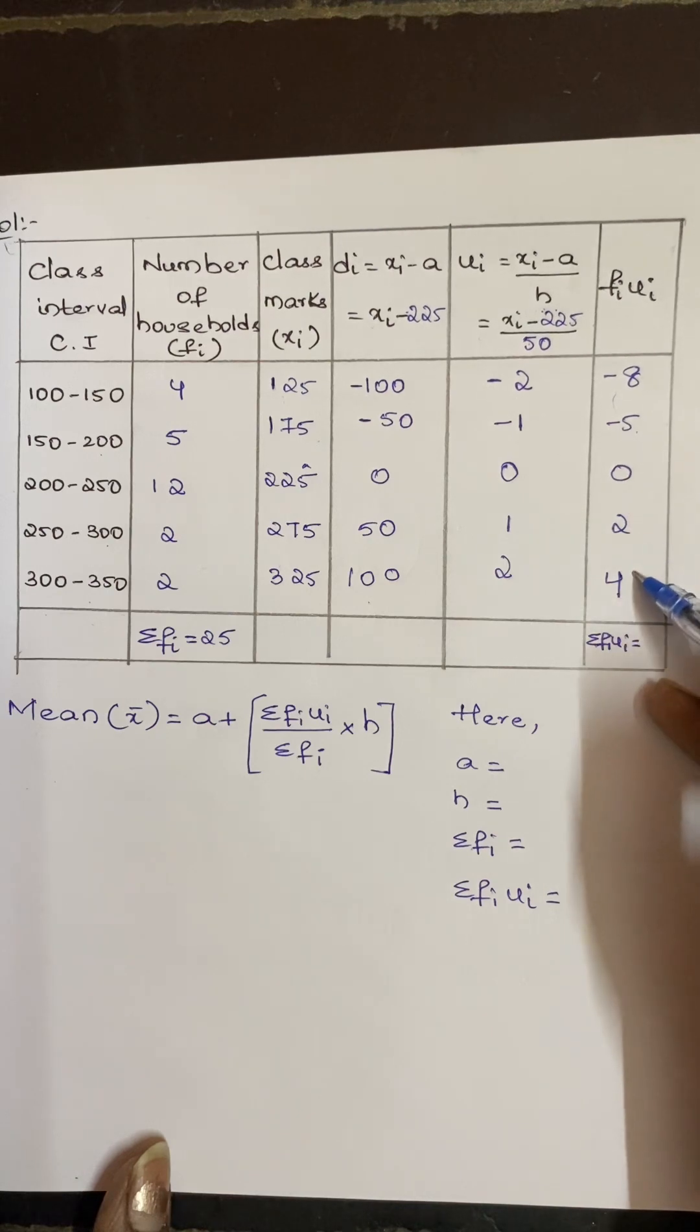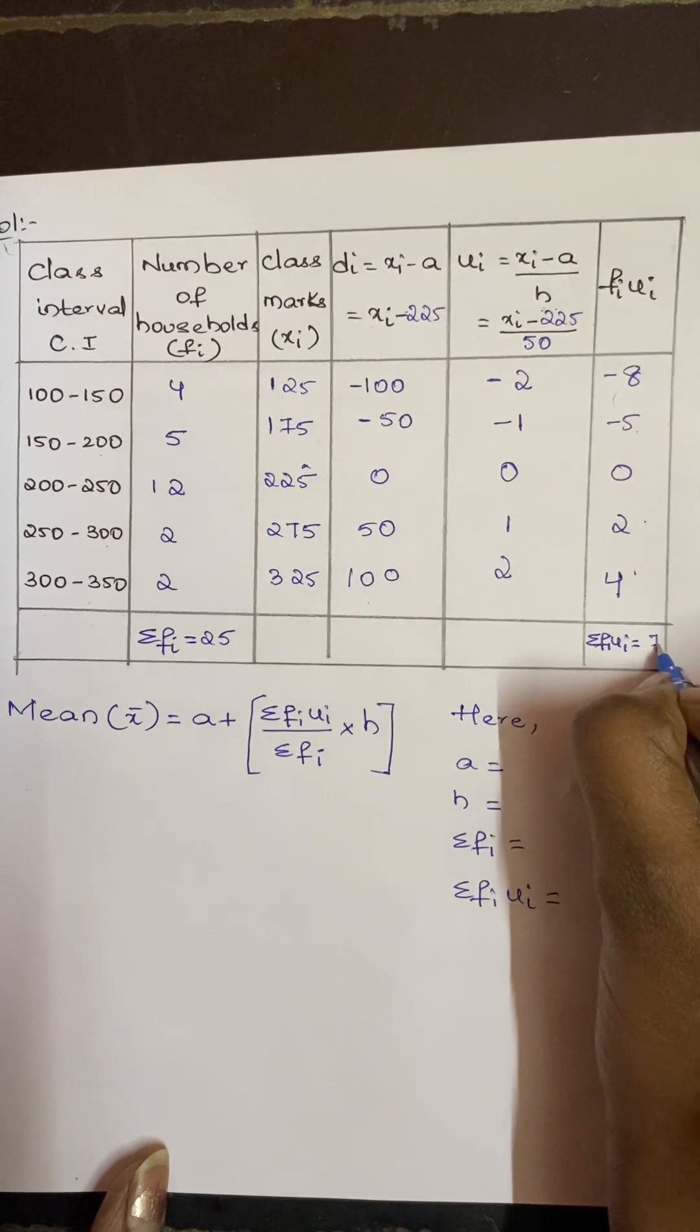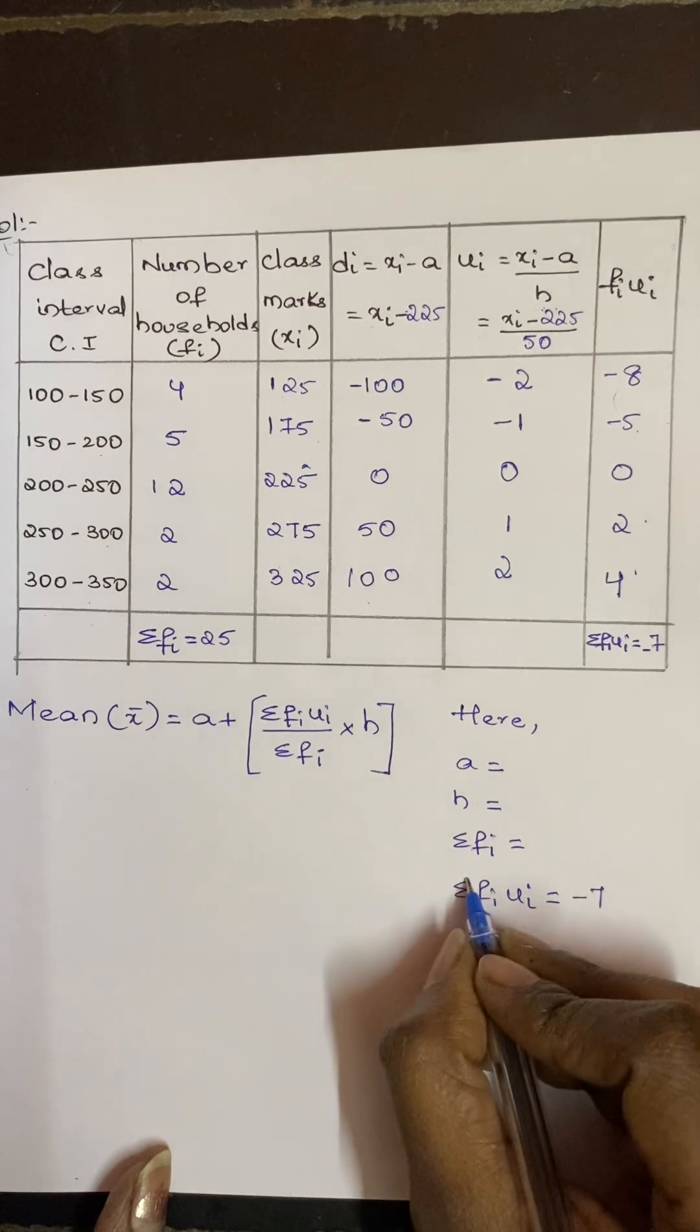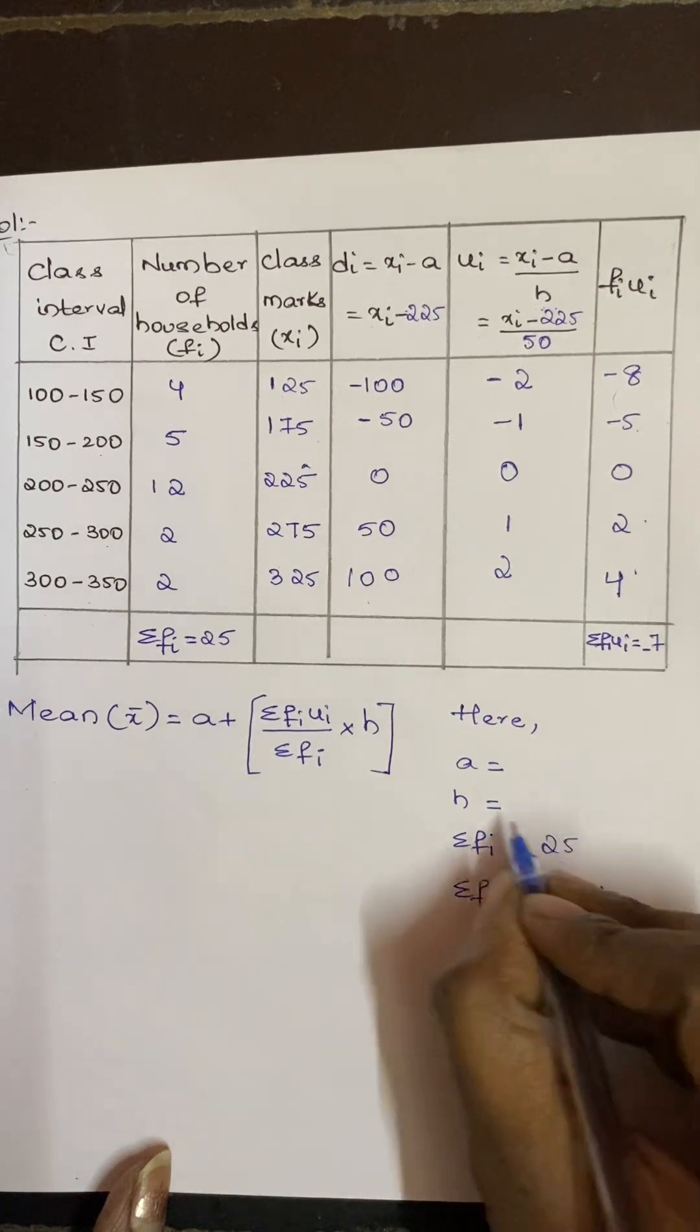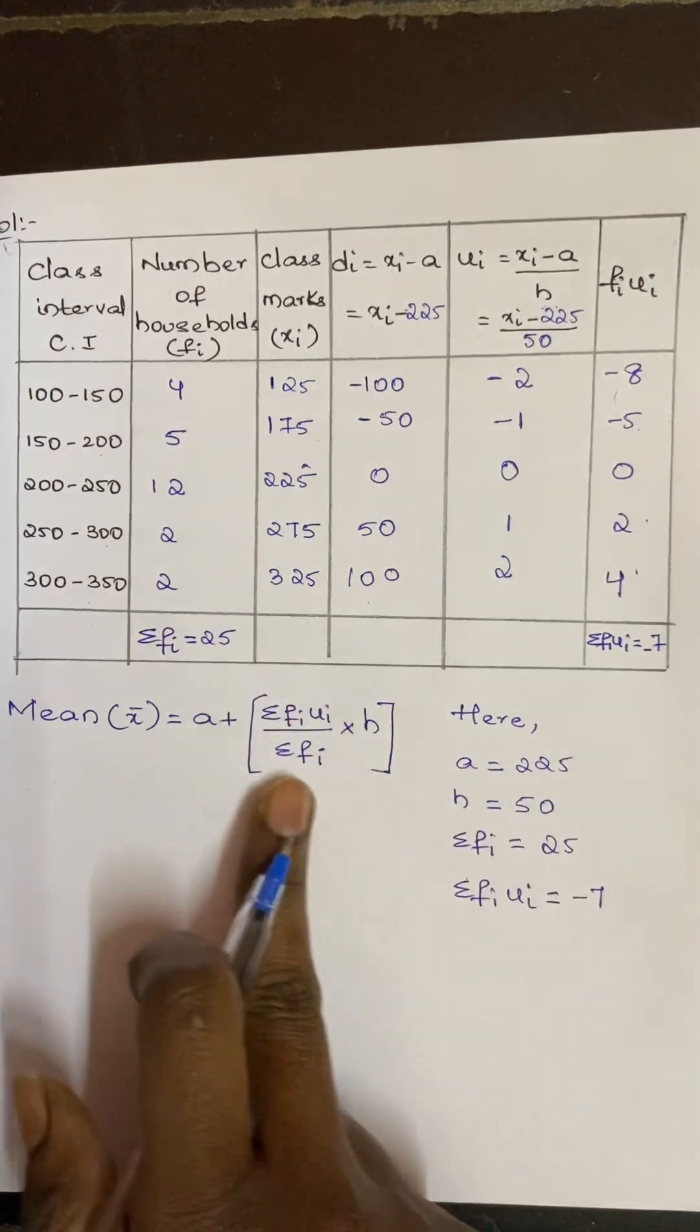Now 8 plus 5 becomes 13, and 4 plus 2 and 4 plus 2 becomes 6. 13 minus 6 becomes 7. Since 13 is having biggest value, it is minus 7. So Σfi·ui is minus 7, Σfi is 25, h value is 50, and a is 225. Since we have all the values required for the formula, now we will directly substitute these values.